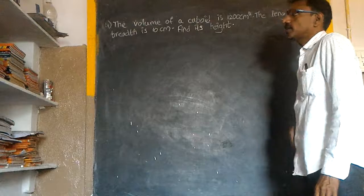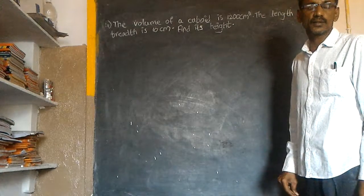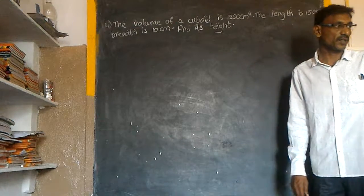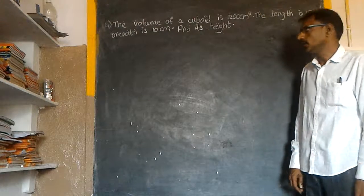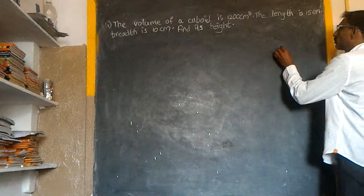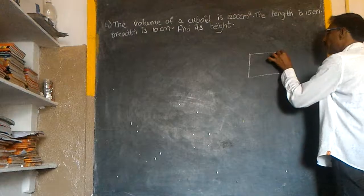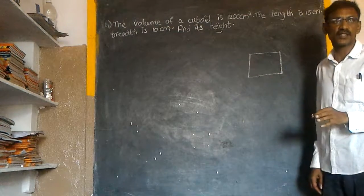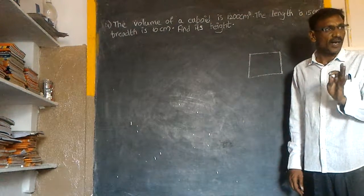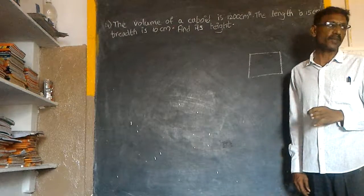The volume of a cuboid is, what is it? Centimetre. Volume of a cuboid. This is the area. The length of a cuboid is the area. The height of a cuboid is the volume.